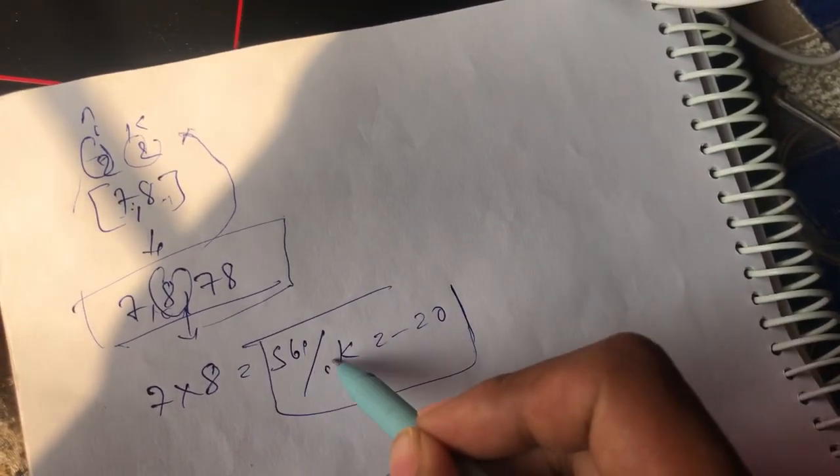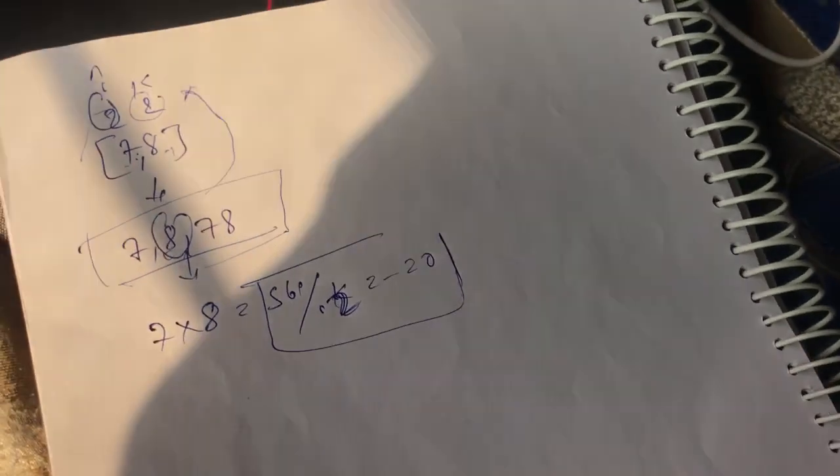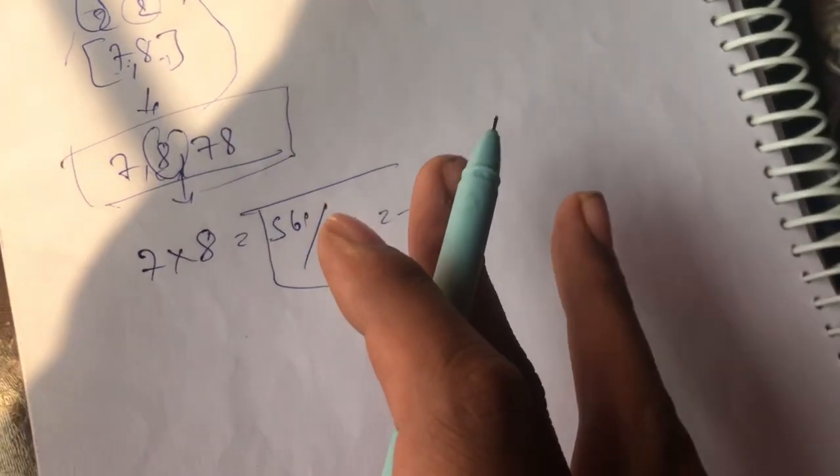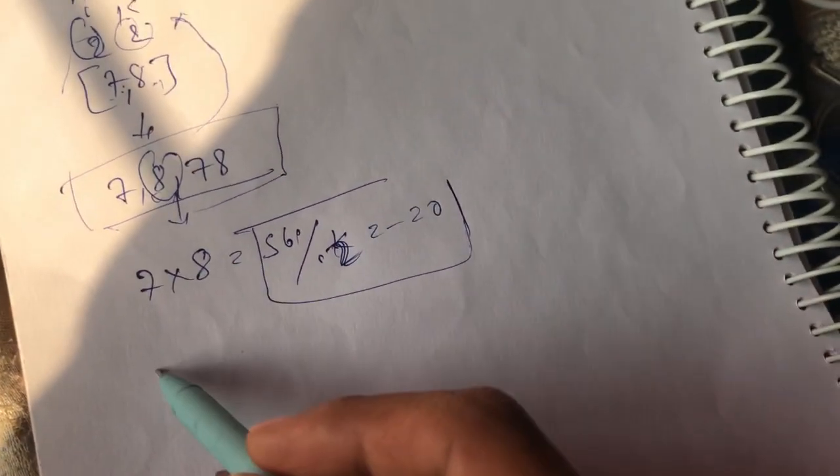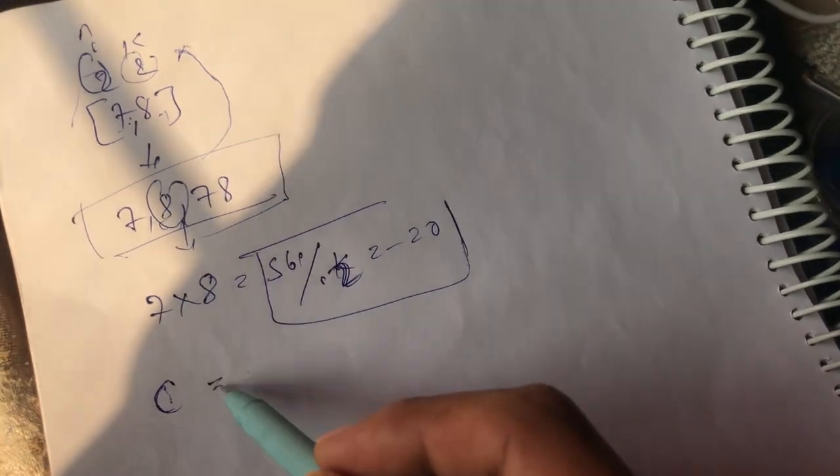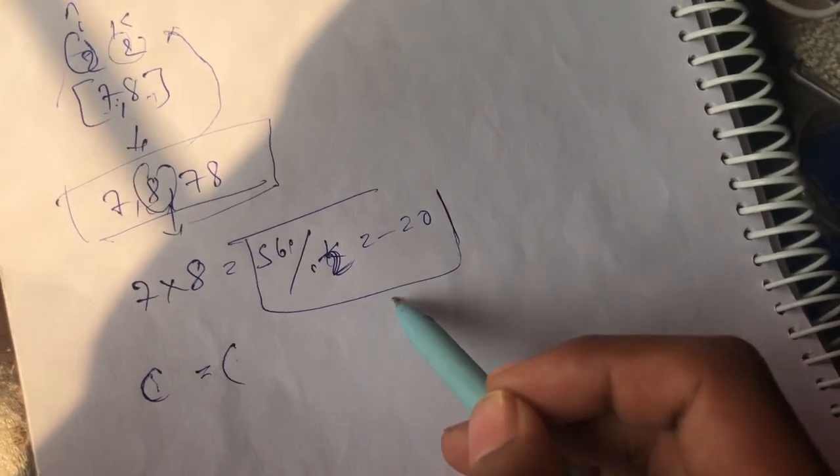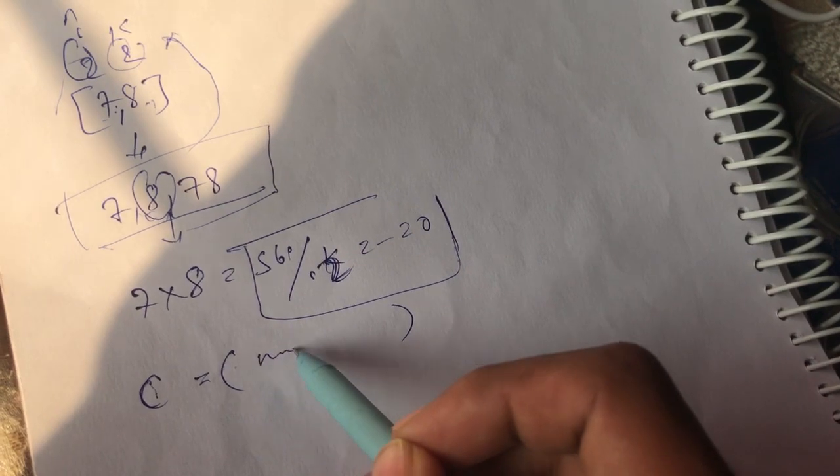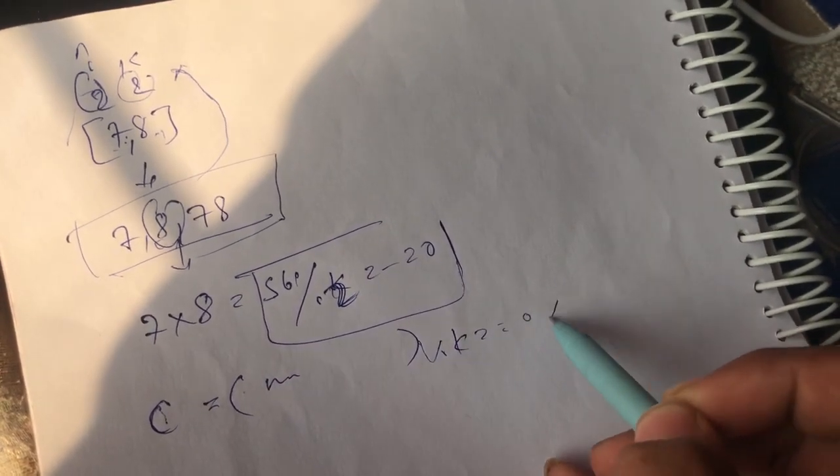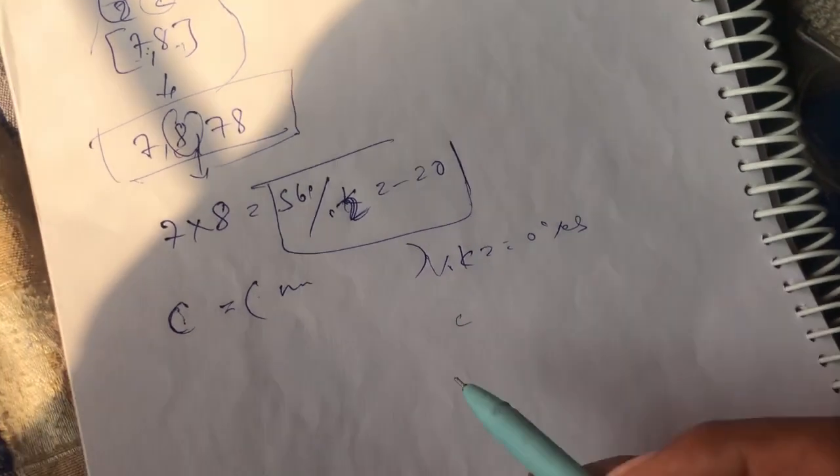So from this observation, what we can conclude is that now we can take a variable c, and we can store the product of all the elements of the array. And if it is divisible by k, then we can print yes, otherwise we can output no.